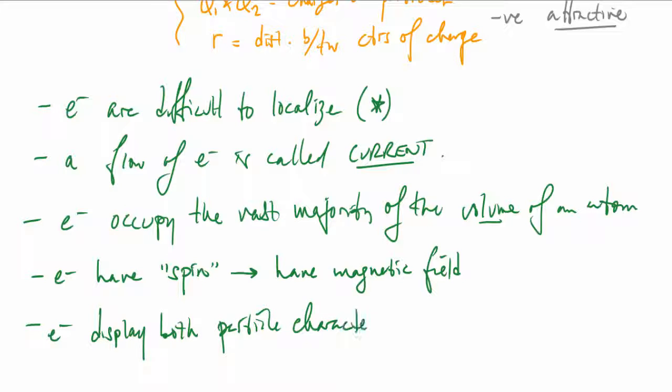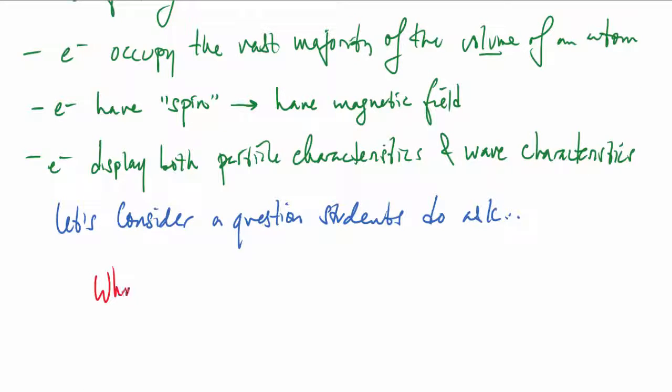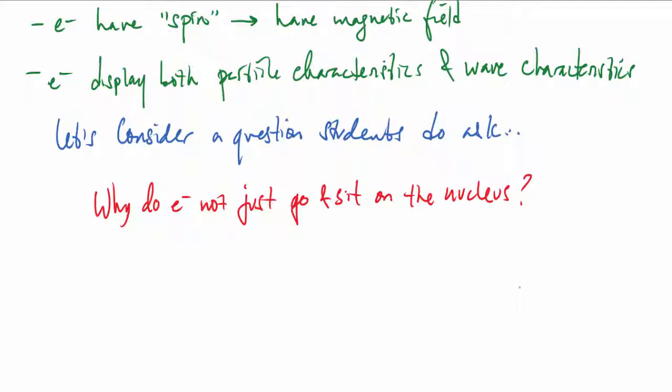Electrons display both particle and wave characteristics, which is a very dense statement on its own. Let's ask a question that students ask regularly: why don't the electrons just go park themselves on the nucleus? They are negative, the nucleus is positive—wouldn't it be easier for electrons to just go sit there?